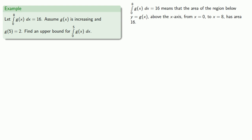Now the problem is we don't know what g of x looks like, but we do know a few things about it. We know that g of x is increasing and that tells us that the graph of y equals g of x is rising.